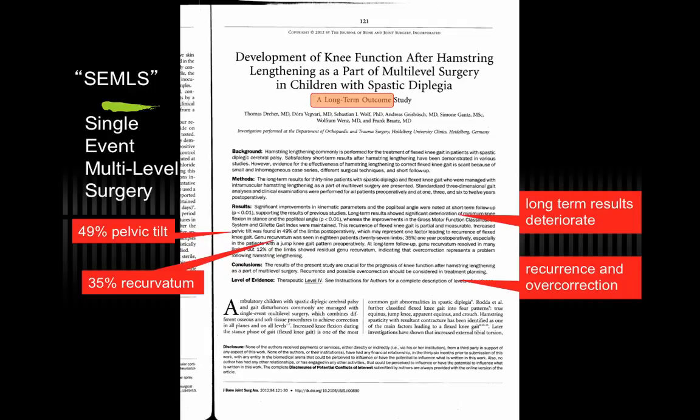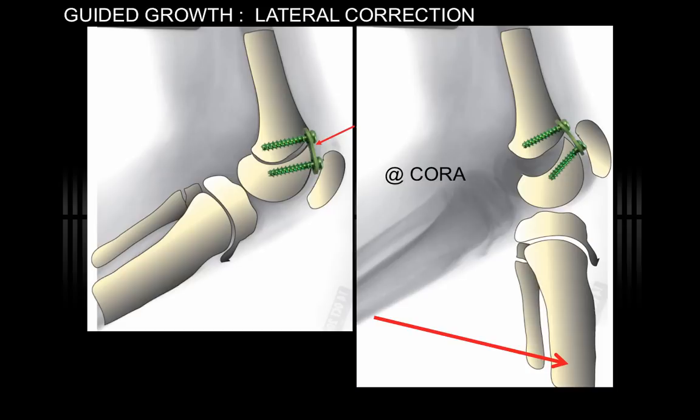Furthermore, if you study hamstring lengthening and multiple-level surgery, the long-term results can be disappointing, as this article in the Journal of Bone and Joint Surgery shows, with pelvic tilt, recurvatum, and deterioration of long-term outcome.